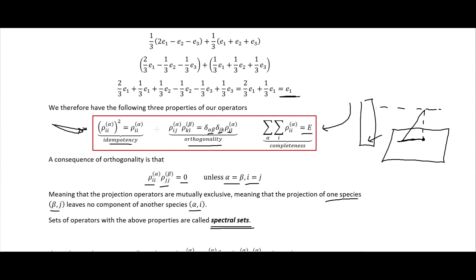This video covered the properties of projection operators. The three important properties are idempotency, orthogonality, and completeness. I'm not certain that 'orthogonality' is the conventional name for the second property, but it makes sense given the Kronecker deltas involved. I hope you found this video helpful and I will see you in the next one.